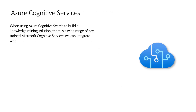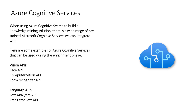The second service we can use when building a knowledge mining solution is Azure Cognitive Services. When using Azure Cognitive Search, there is a wide range of pre-trained Microsoft Cognitive Services we can integrate with. Examples include Vision API such as Face API, Computer Vision, and Form Recognizer; and Language API such as Text Analytics or Translator Text API. For instance, if you have forms or documents, you can use Form Recognizer to extract data from tables in the document, or use Translator Text API to translate the original text.